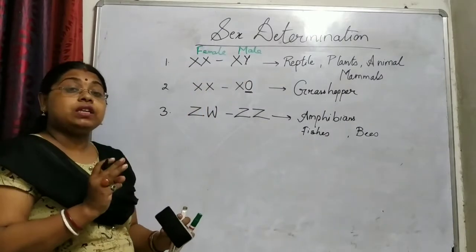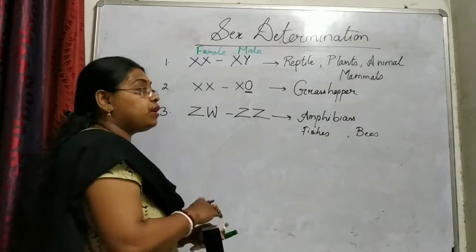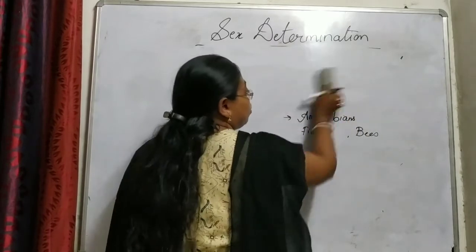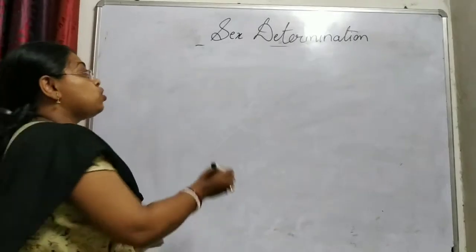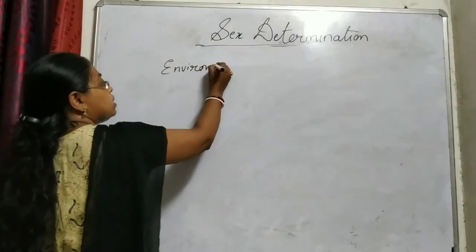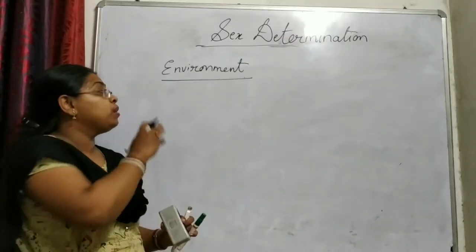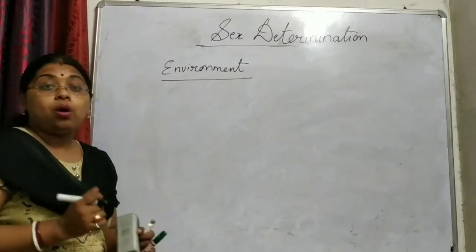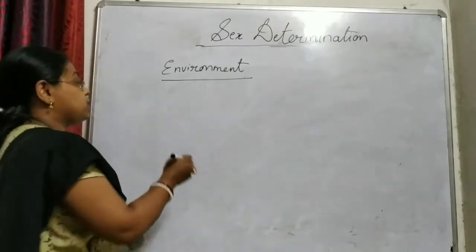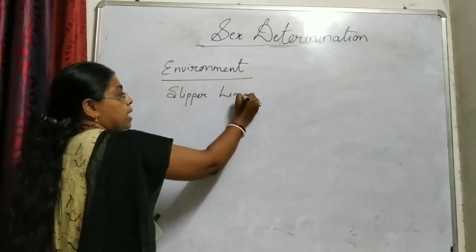These are the basic three varieties of genetic makeup upon which we determine the sex. There is another variety known as environmental factors. Apart from the genetic makeup, the environment also plays an important role. When we talk about the environment's effect on sex determination, there is one organism commonly known as the slipper limpet.